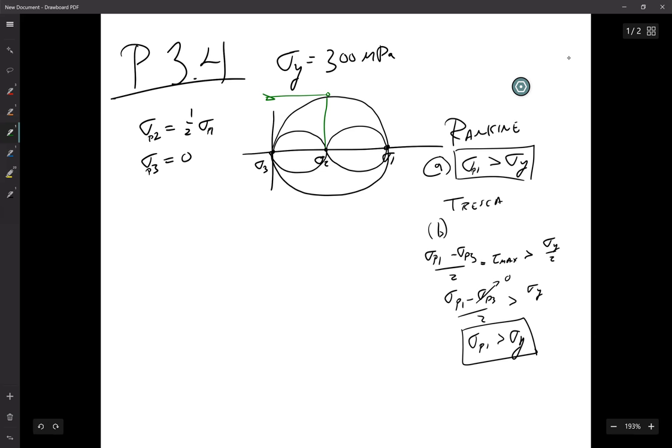And you can think of that graphically simply in terms of knowing that that is tau max. So when tau max goes over the yield stress, then it fails.